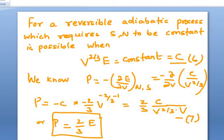Again, from our previous knowledge, we know P = -(∂E/∂V)_N,S. N and S are constant, so it will be -∂/∂V. And what is E? E = C/V^(2/3). On doing the differentiation, we get (2/3)(C/V^(5/3)). V^(5/3) can be split as V^(2/3) × V. So what is V^(2/3)? V^(2/3) = C/E. So this C cancels and the E comes in the top, and our P, that is the pressure, is 2/3 E/V.